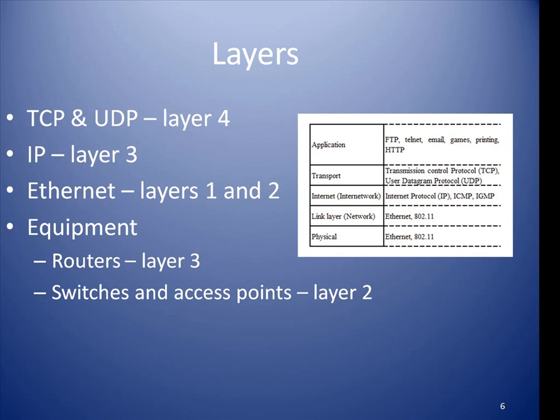Network devices also have their own job to do, and so are designed to function at a particular layer. Taking this one step further, devices process transmissions based on the addresses and protocols at that layer. For example, a computer sends network traffic to a switch, which processes the transmission up to a certain point. When it is done, the transmission is forwarded to the router. When the router completes its tasks, it forwards the transmission to the next hop, and so on.